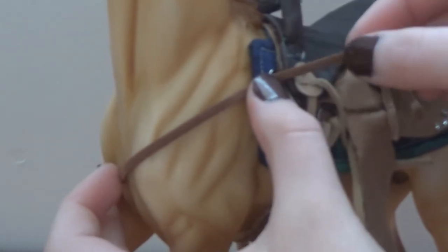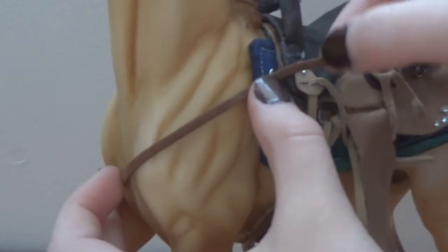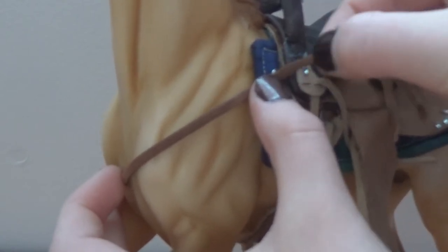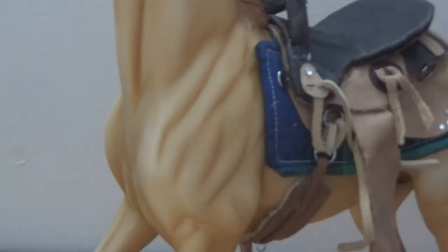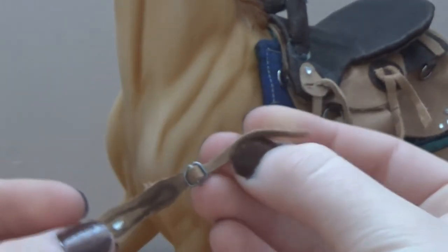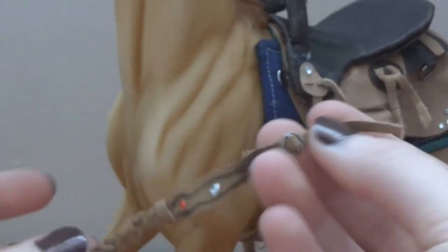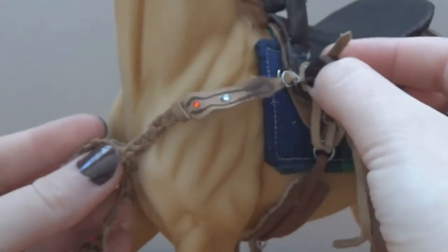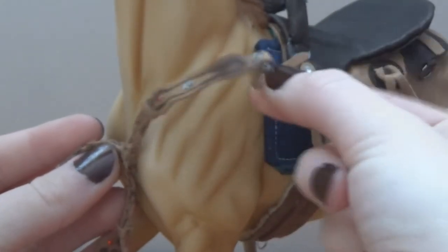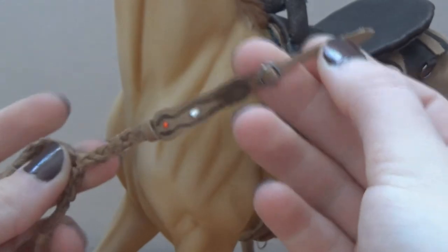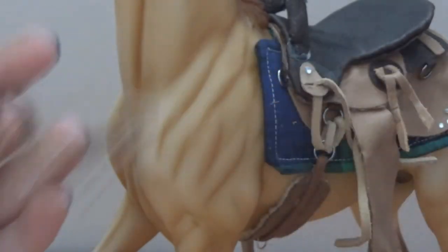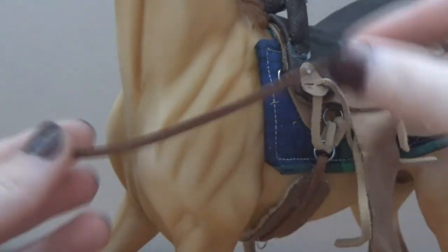So obviously we need extra so we can glue things together, so you want about a thumbs width or so of extra for that. But then you also need extra to decide how much movement you want to have. For example, I left quite a bit of extra here because I wanted it to be able to fit a large variety of models. I could have cut it a lot shorter here but I left quite a bit extra so that way it could fit a much larger horse as well. So you just have to decide if you want it to specifically fit one horse or if you want it to fit a whole bunch.